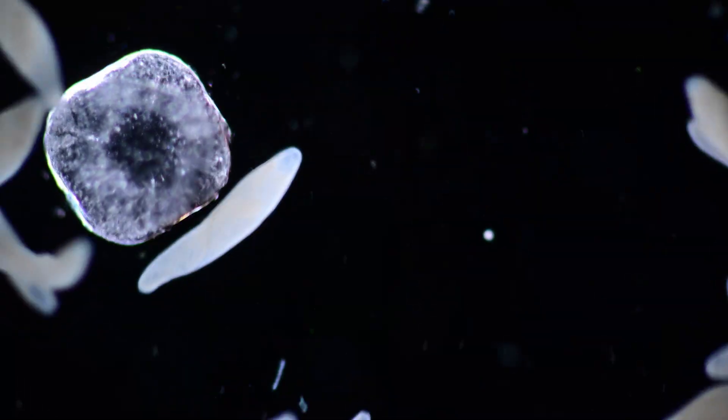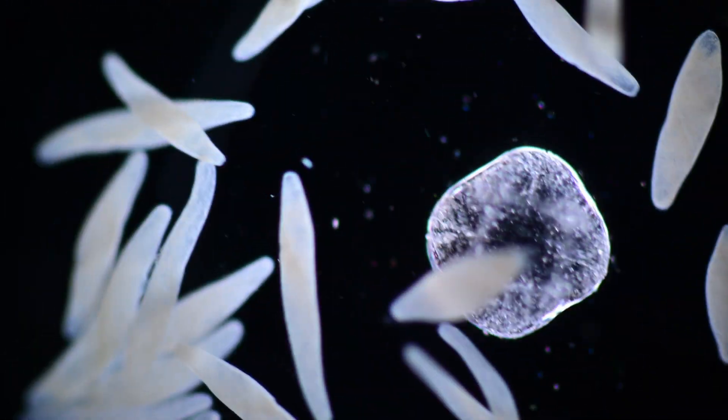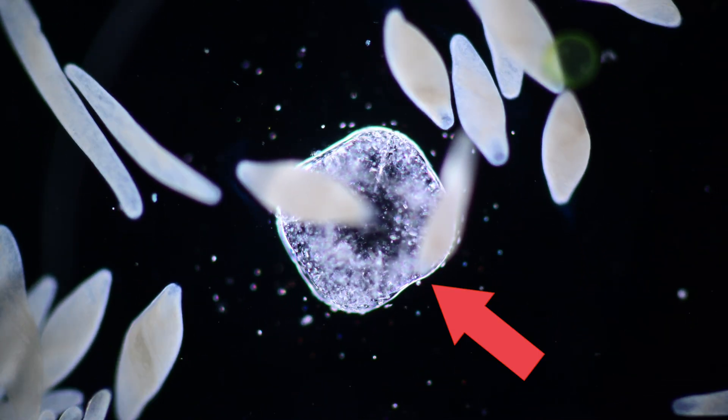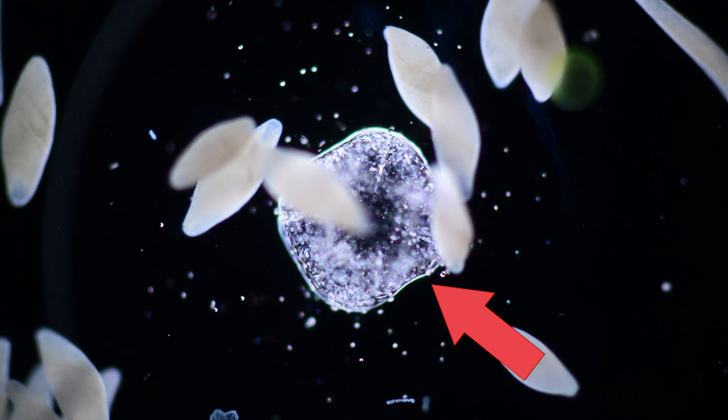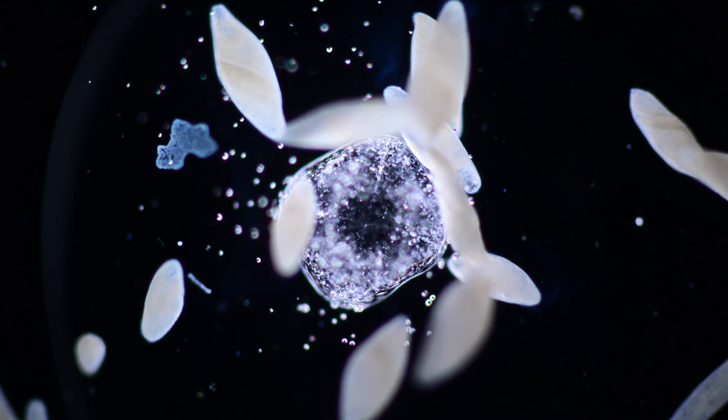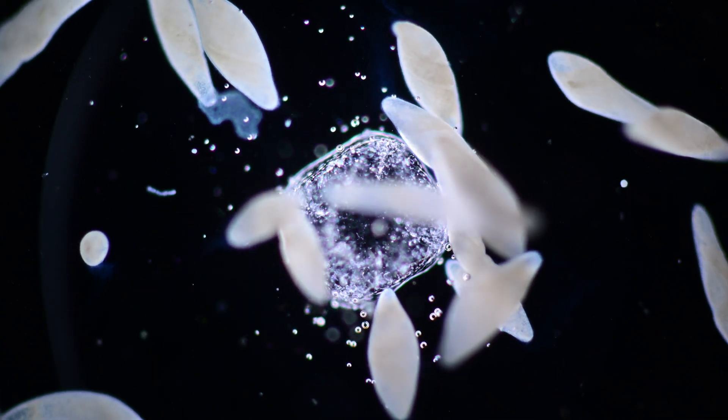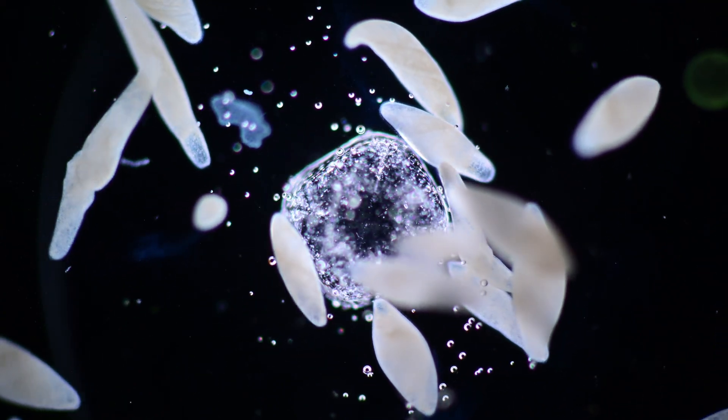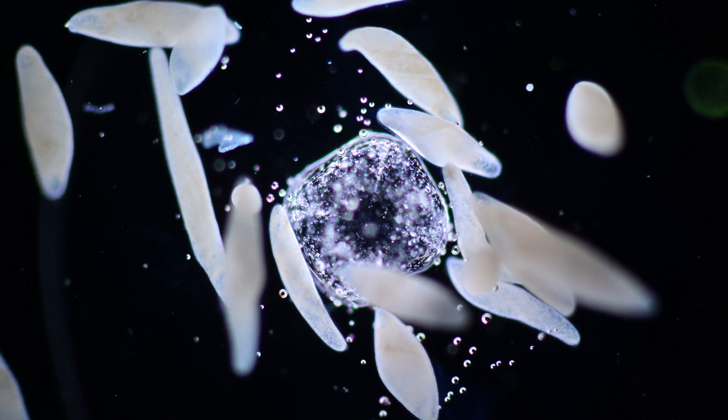In the next example, Spirostomum is reacting to some salt dissolving in water. Salt is poisonous to the ciliate. As soon as the cells get into contact with the salt solution, they contract. In this case, the contraction is a stress reaction, possibly even to warn other Spirostomum cells.